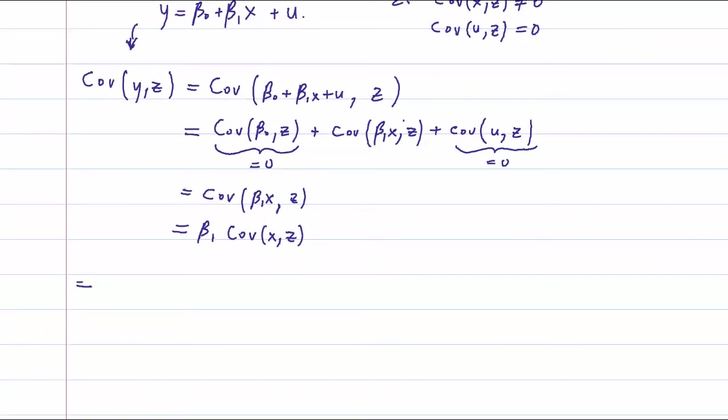So I'm just going to solve this for beta one. So I have beta one equals covariance between y and z over covariance between x and z. So I just take the covariance here and put it on the other side.